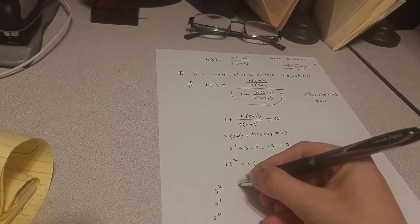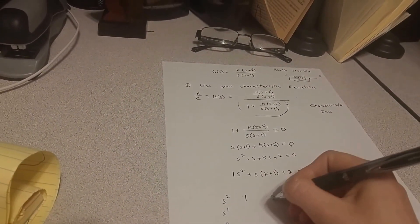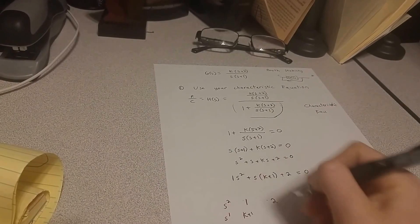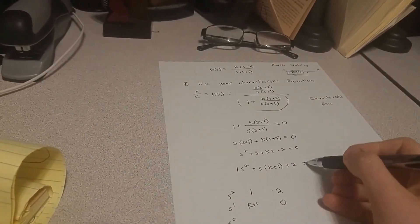So this is a 1 right here. So this would be 1, that would be 2. This would be k plus 1, and then this would be 0 because there's no s to the negative 1.